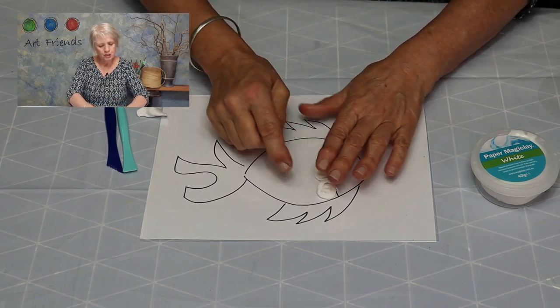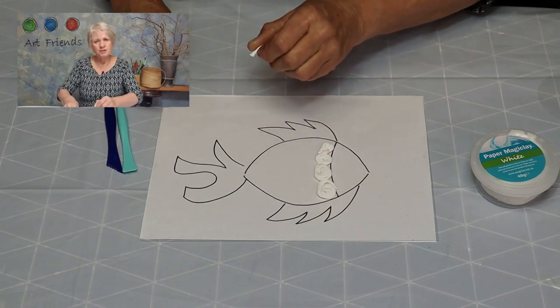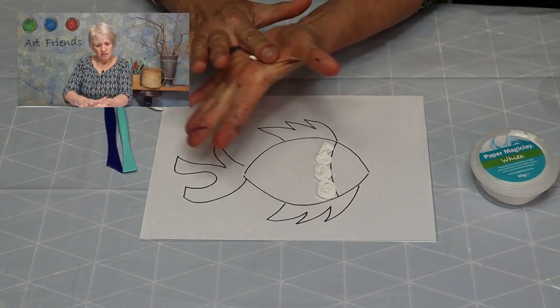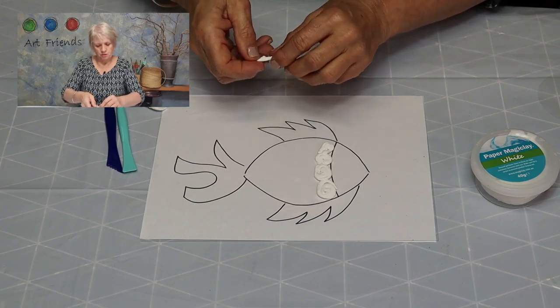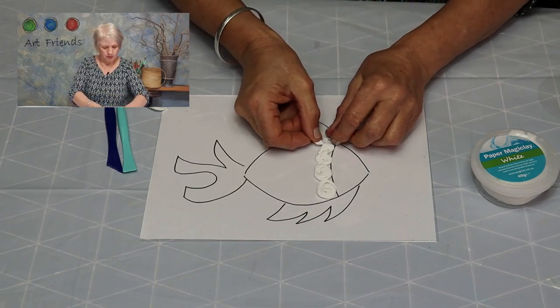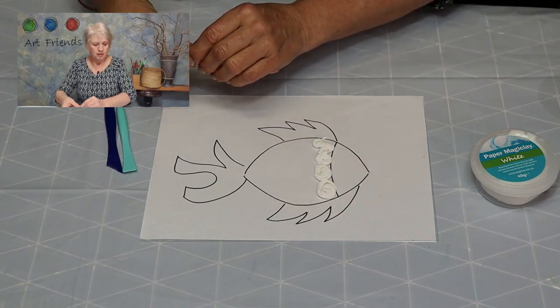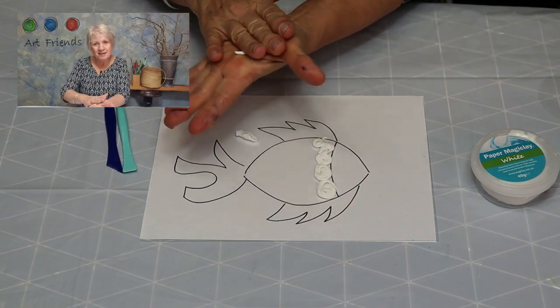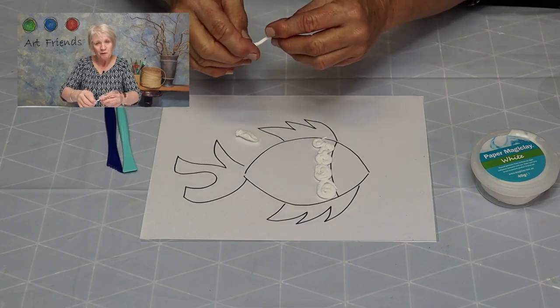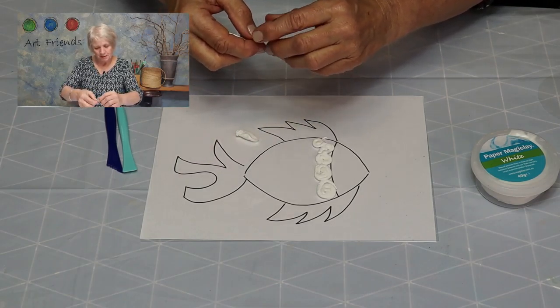Now as you're going along, do make sure they touch each other because you want them to stick and to join. So here we go, a few more. I'm going to continue making my little spirals. You can watch me or you can make your own spirals.